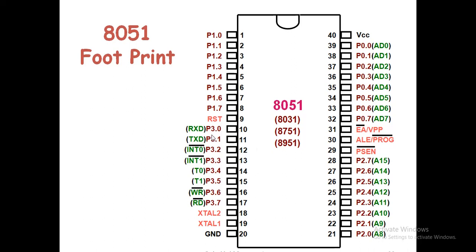Port 3 is very important. P3.0 and P3.1 are RXD and TXD. If you want to transmit a message from your microcontroller to your mobile phone via a GSM module, you transmit through P3.1. To receive from mobile phone to 8051 via GSM, you use P3.0. P3.2 and P3.3 are for external hardware interrupts. T0 and T1 (P3.4, P3.5) are for timer and counter operations. P3.6 and P3.7 (RD and WR) are for reading and writing external memory — we won't use these in this lecture series.